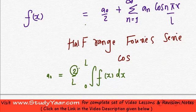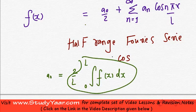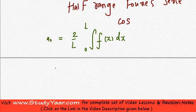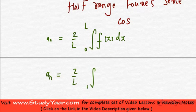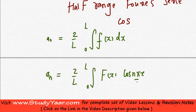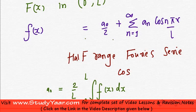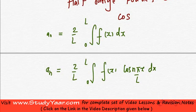Since it is even, we have 2 into the standard formula. Your aₙ is 2 upon l times the integral from 0 to l of capital F(x) cos(nπx/l) dx, and between 0 to l, capital F(x) is small f(x). Therefore, this is my formula for aₙ for getting my half-range cosine series, which is the regular formula for a standard even function.